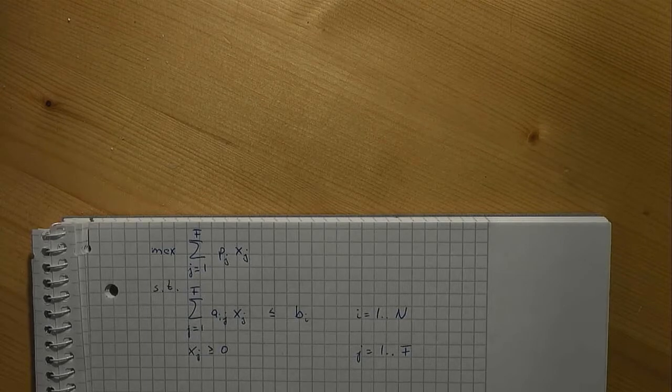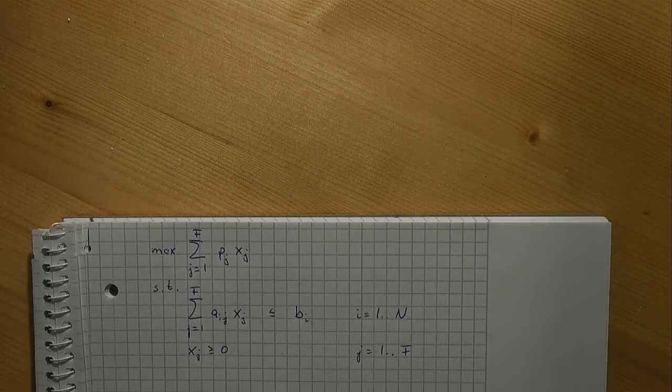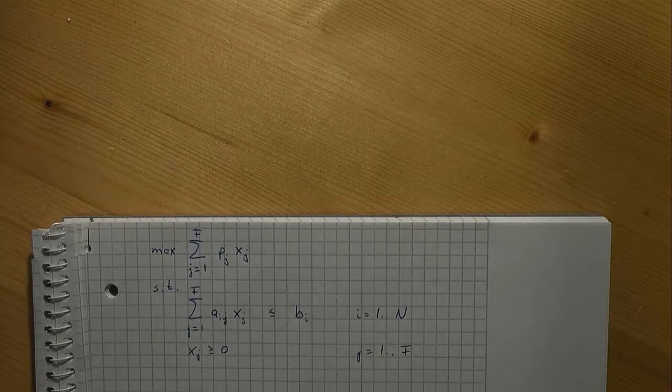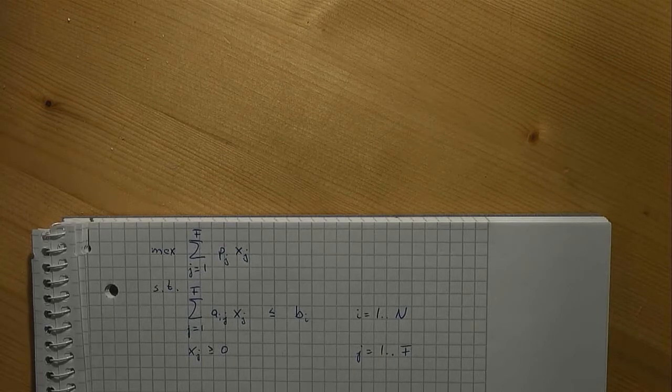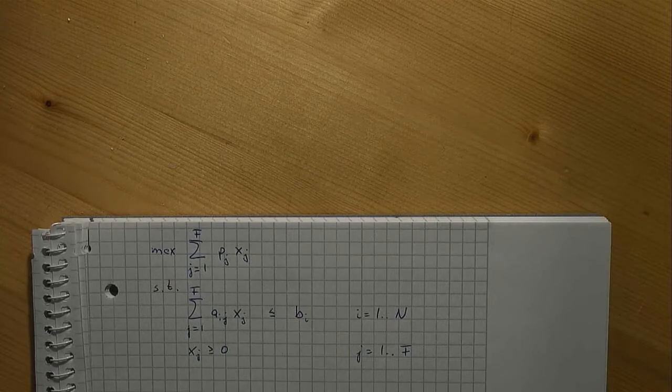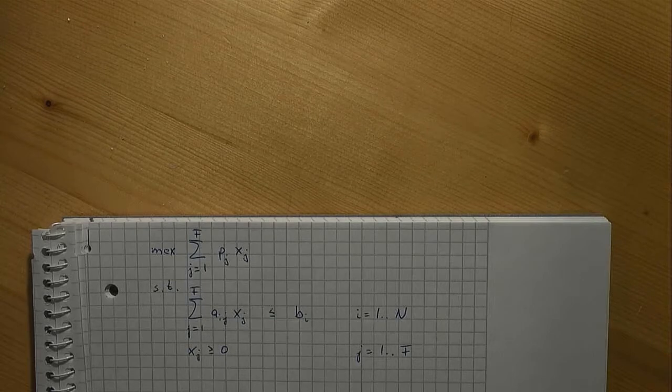The same naming convention holds for parameters. If we want to refer to the price of furniture for example, we use the symbol p with an index that indicates the type of furniture that is made. Likewise, we have used b for the part availabilities or a for the production coefficients.